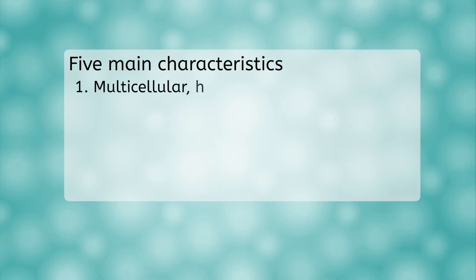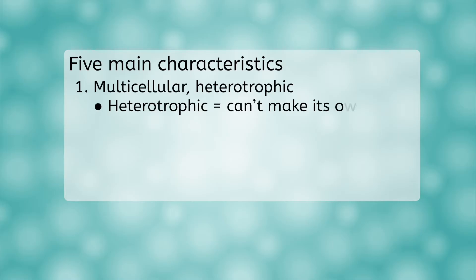One, animals are multicellular, heterotrophic organisms. Do you remember what it means for an organism to be heterotrophic? It means that the organism receives its nourishment by consuming other living organisms. Okay, back to our list.